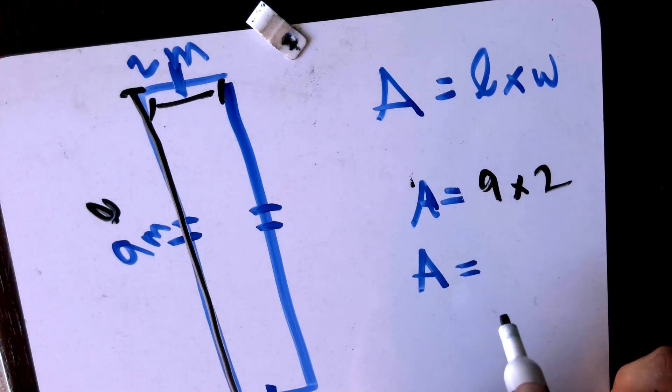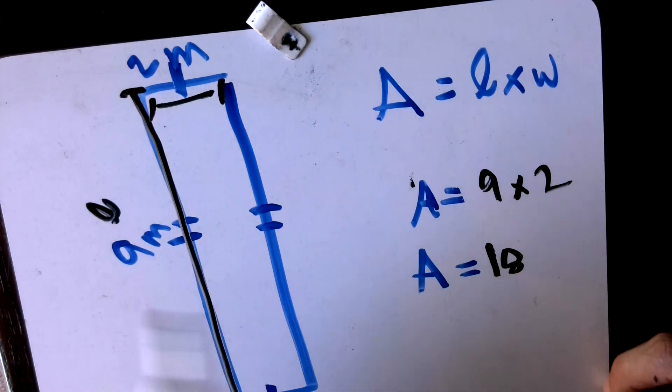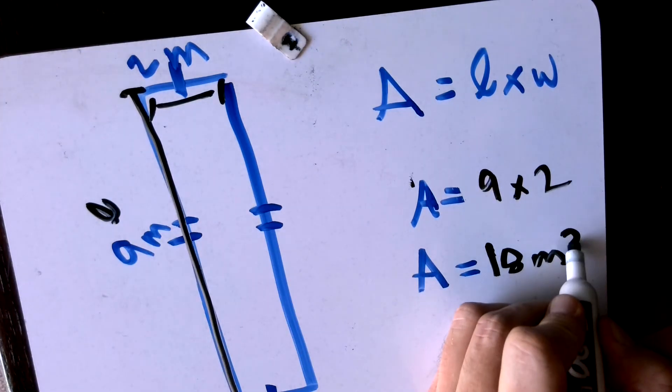Now we remember it's in meters, so we have to remember that for the very end. So nine times two is 18, but what's the unit of measure? Meters. Since we're calculating area, it's meters squared.